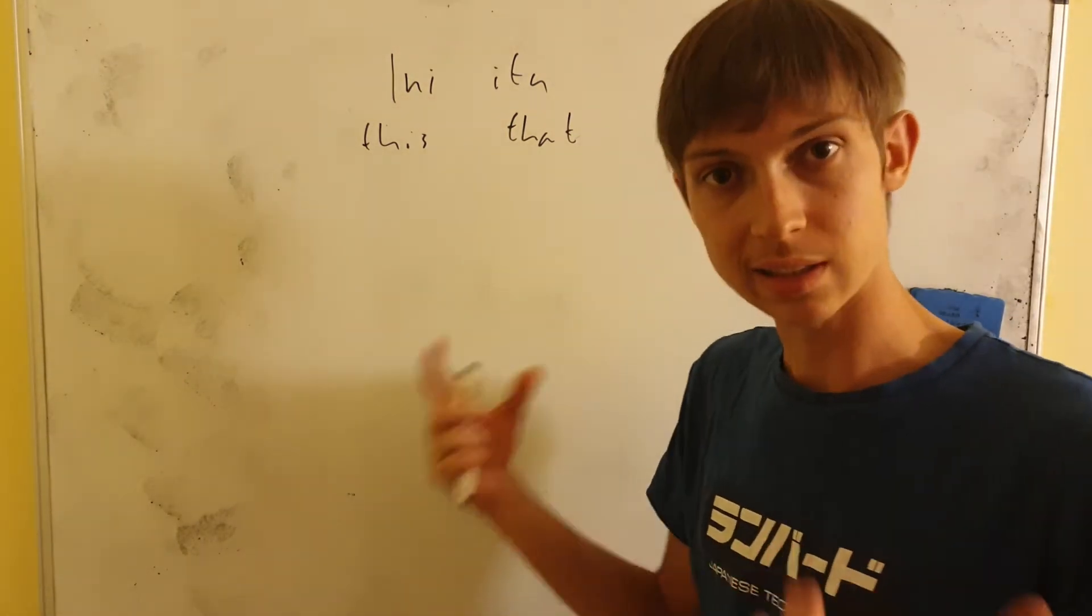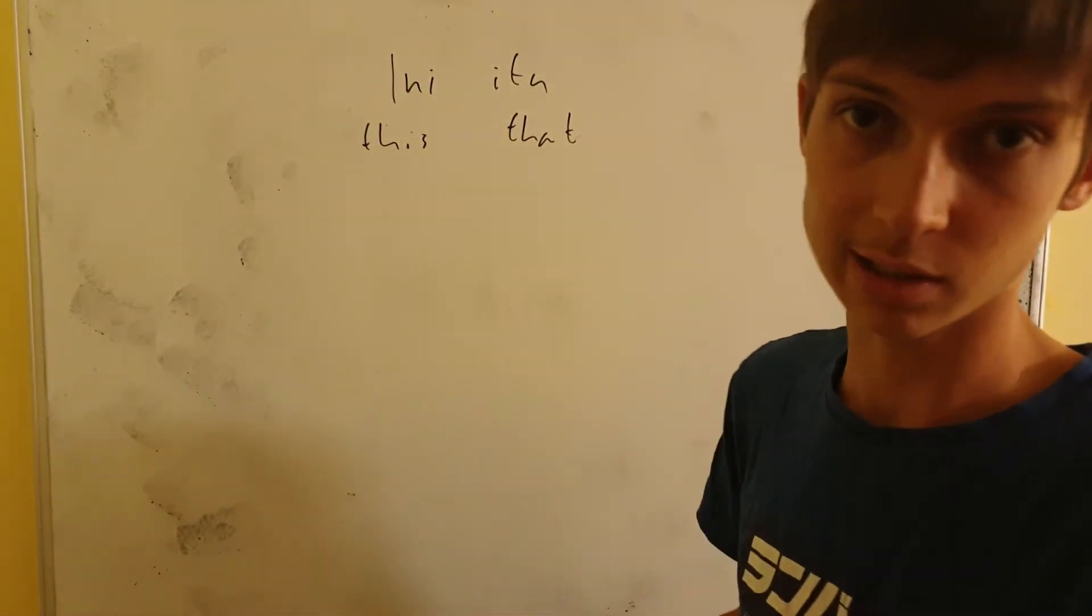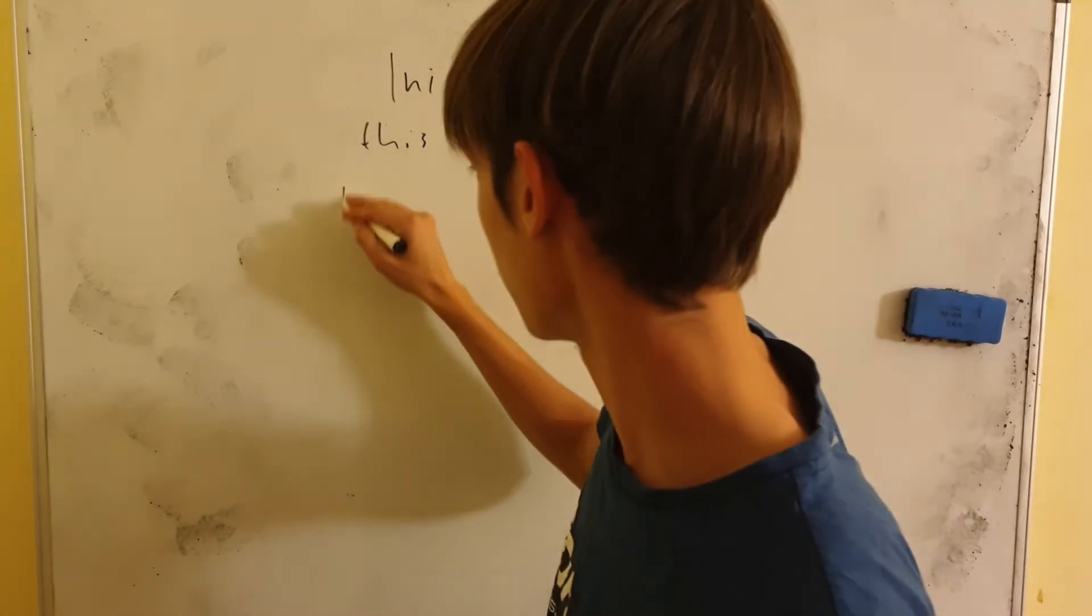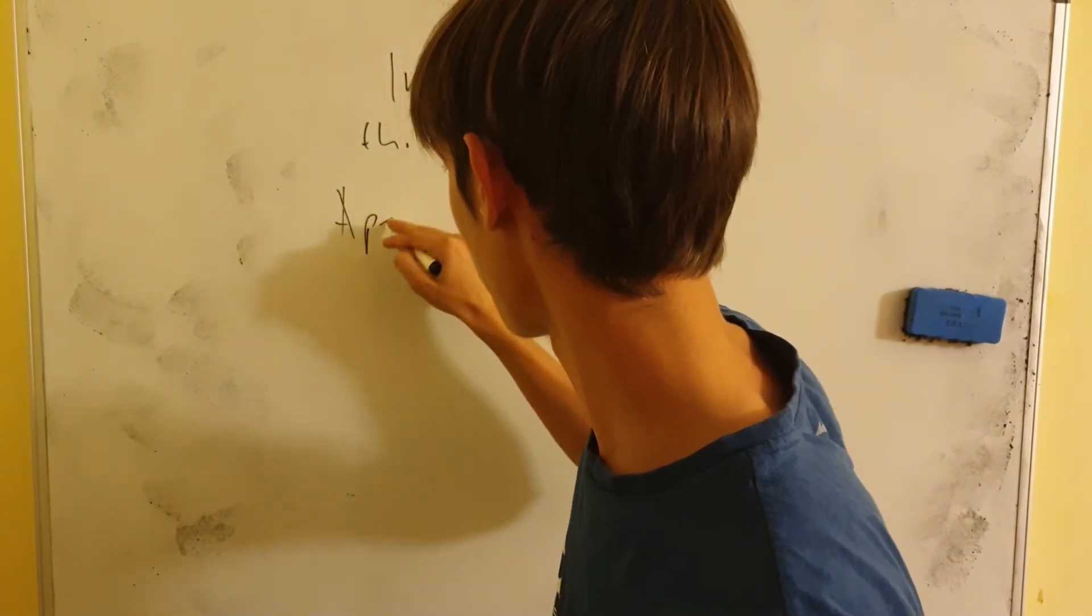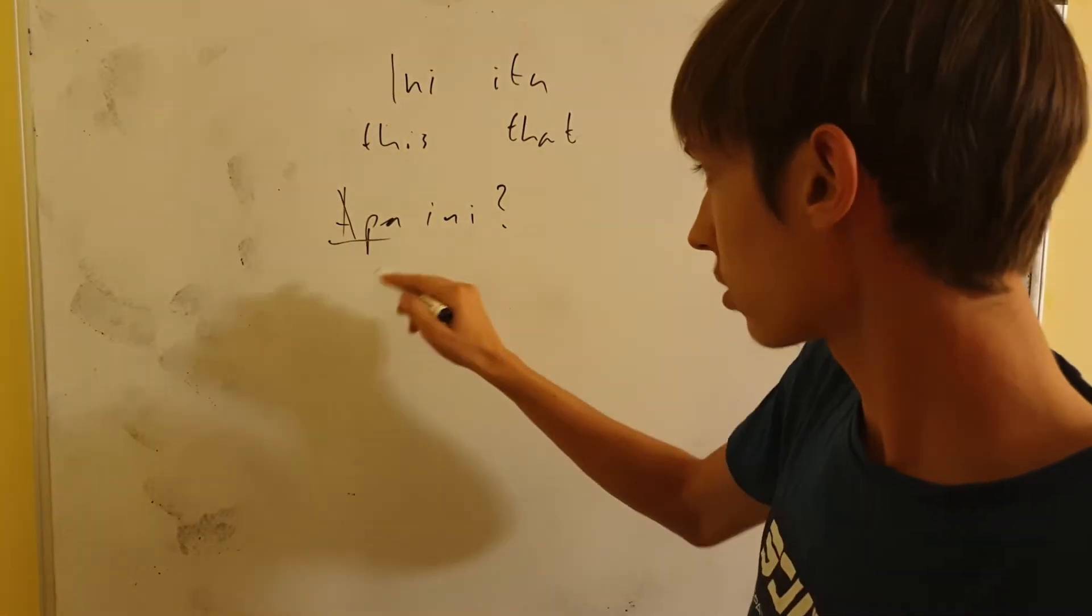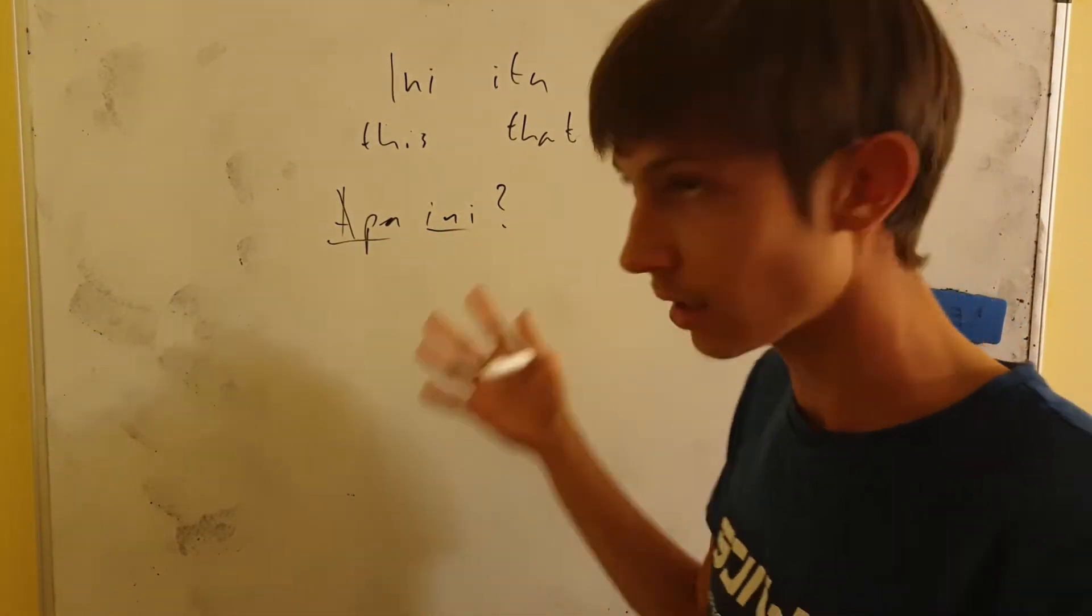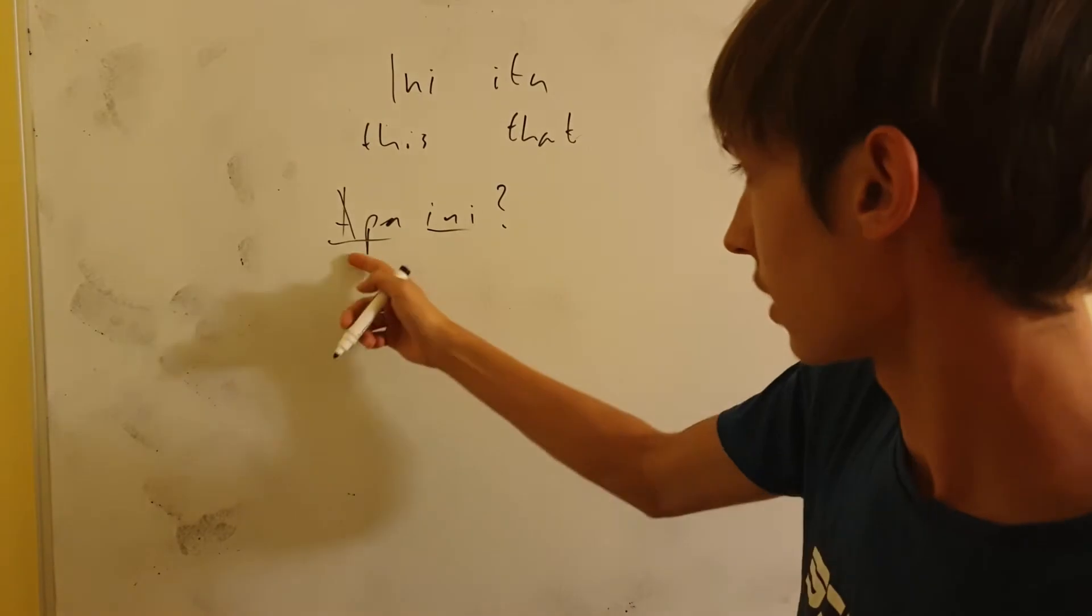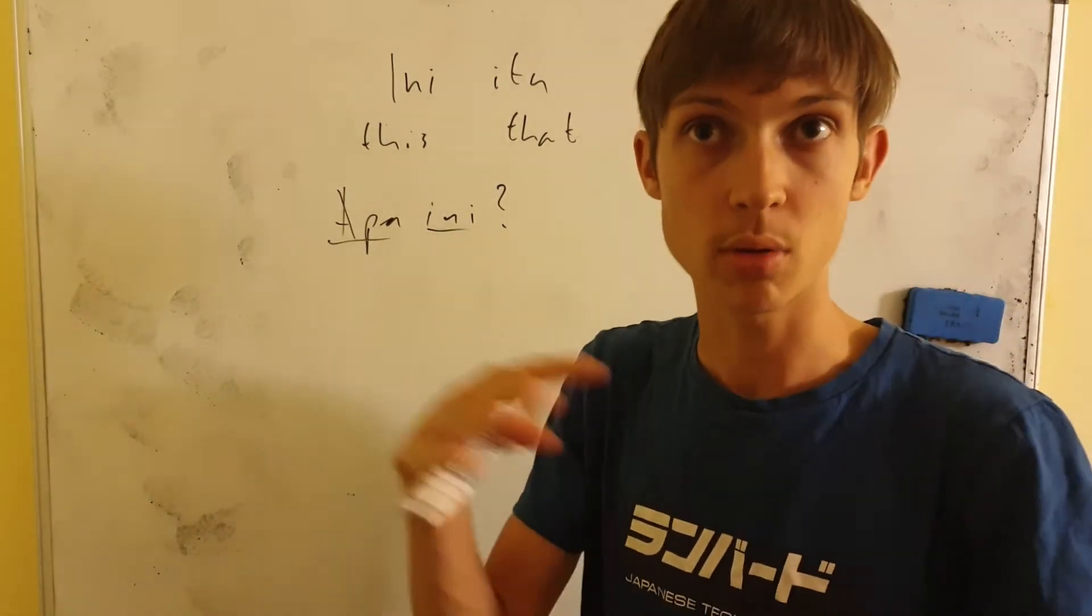Now, how do we use this in sentences? Well, we can use this in sample cases. Let me give a few examples. For example, APA INI. And that can be a question, right? APA is what, INI is this. So this sentence means what is this? You just say what this, and that's how you say what is this.